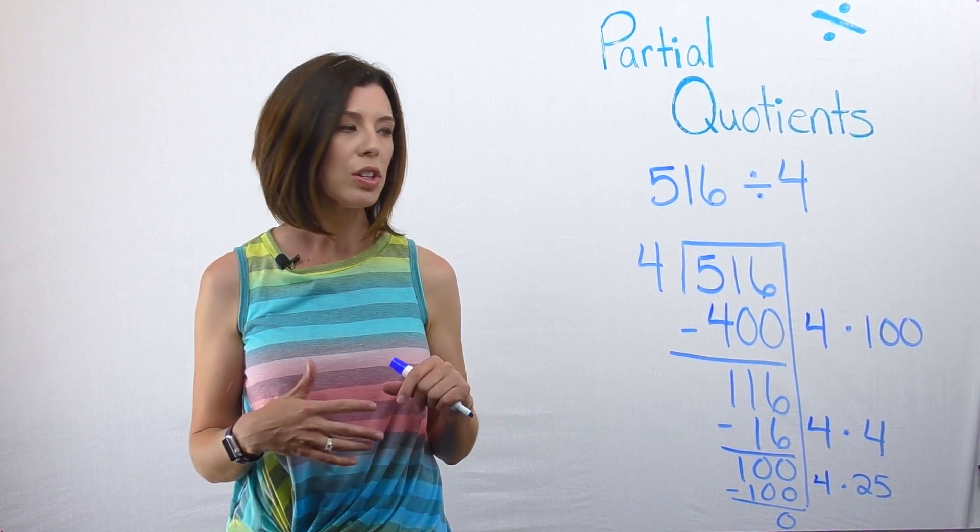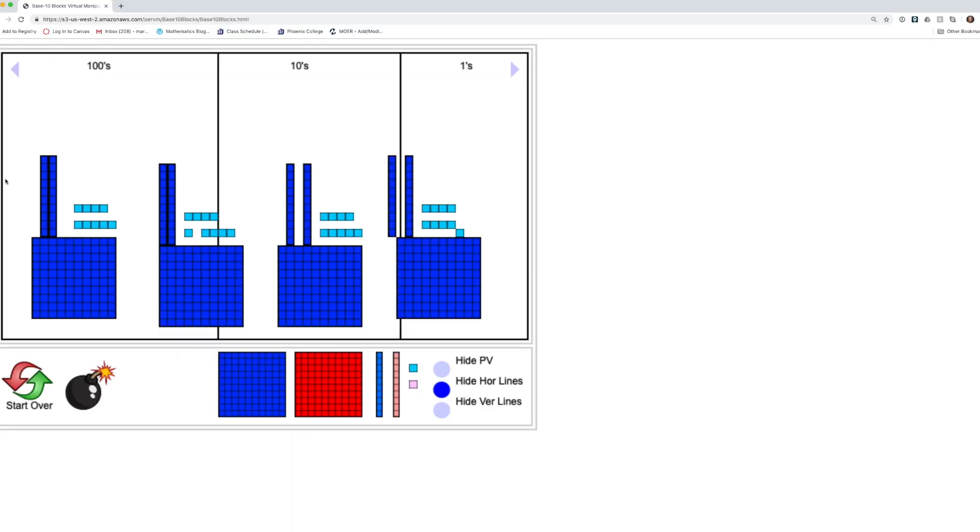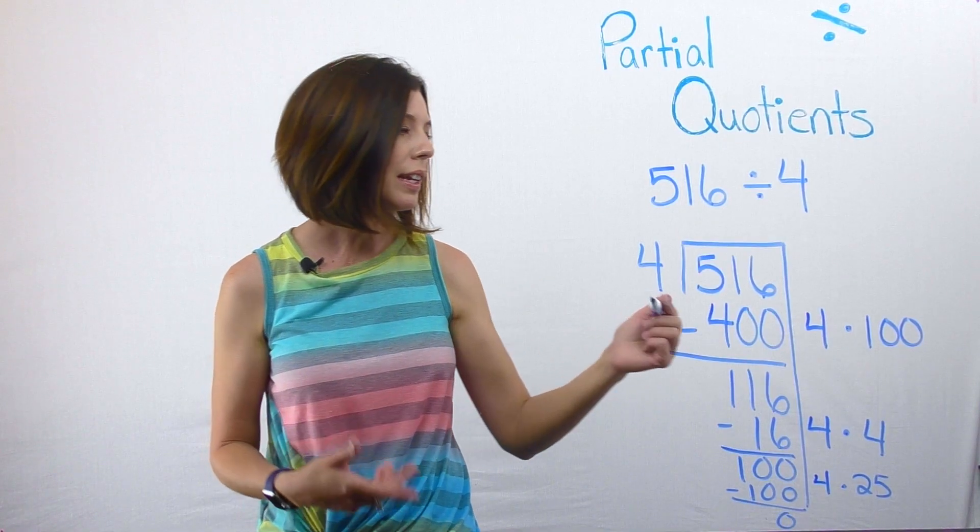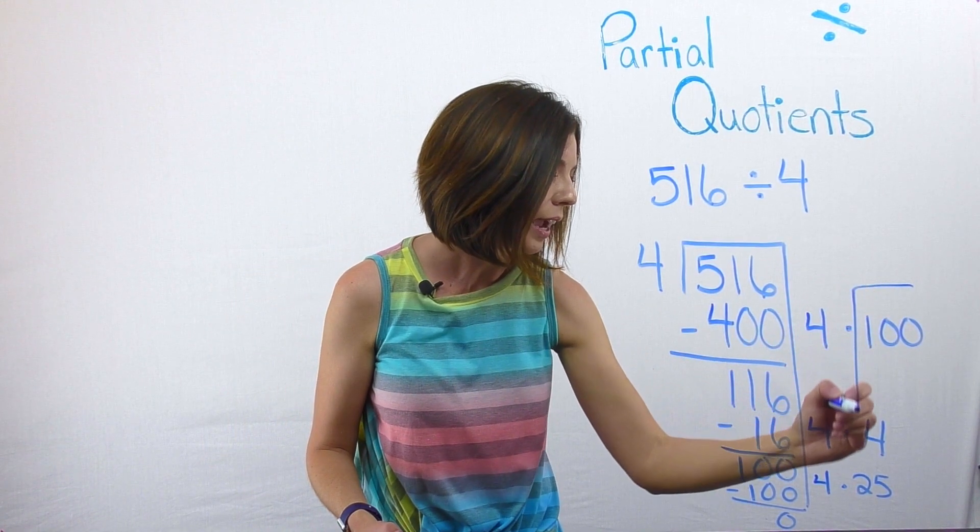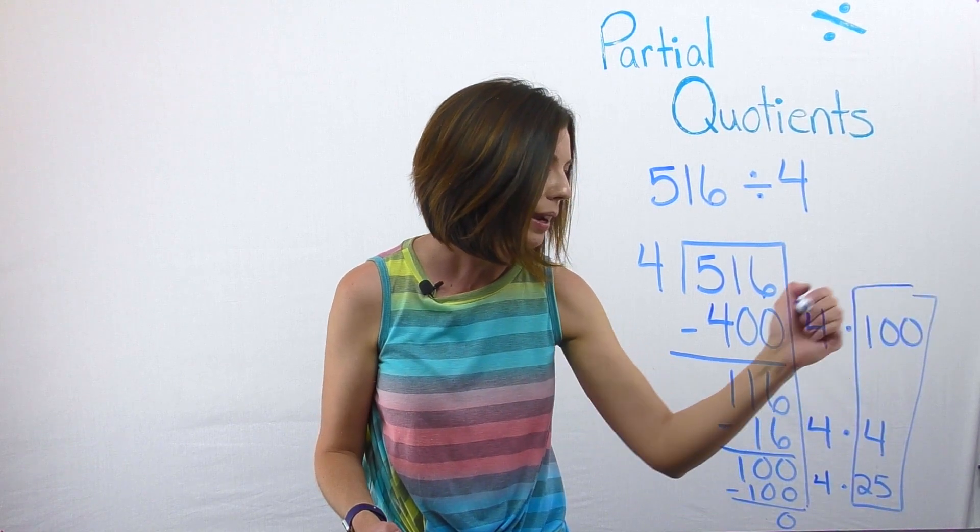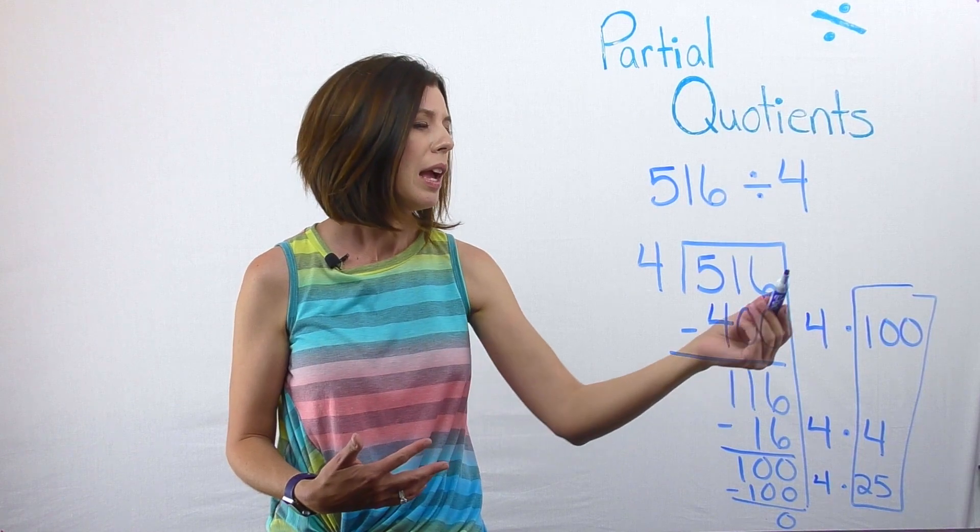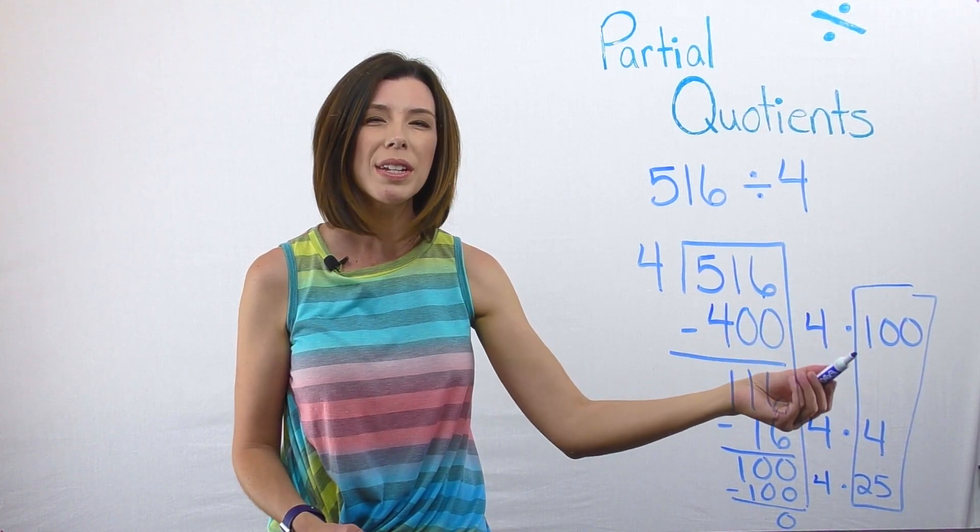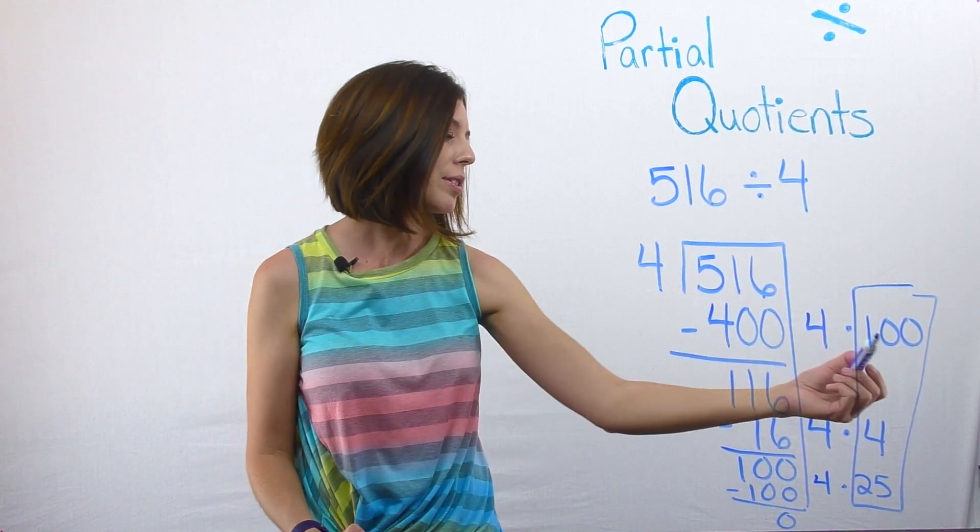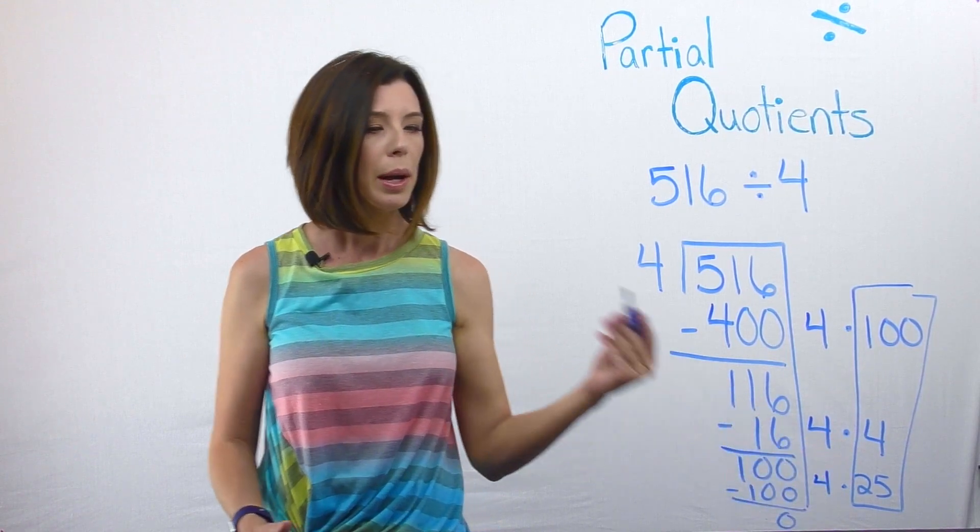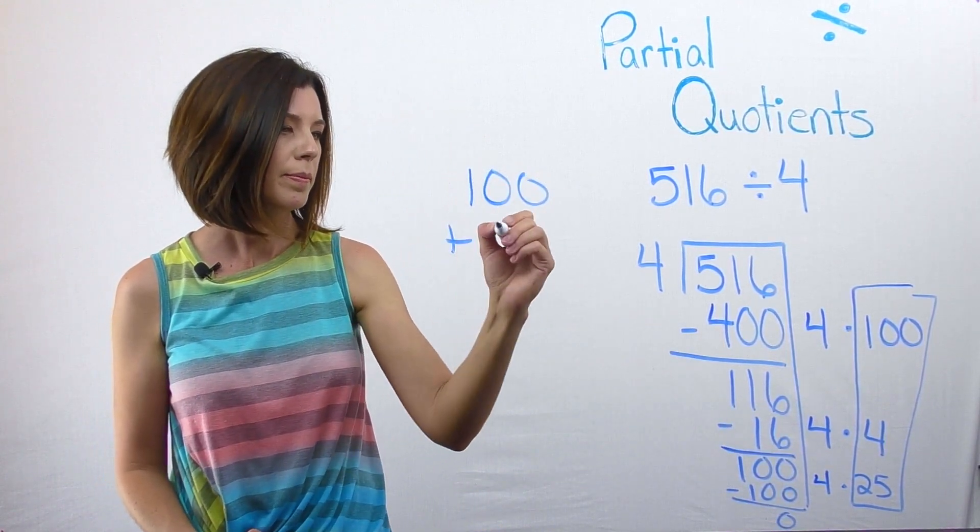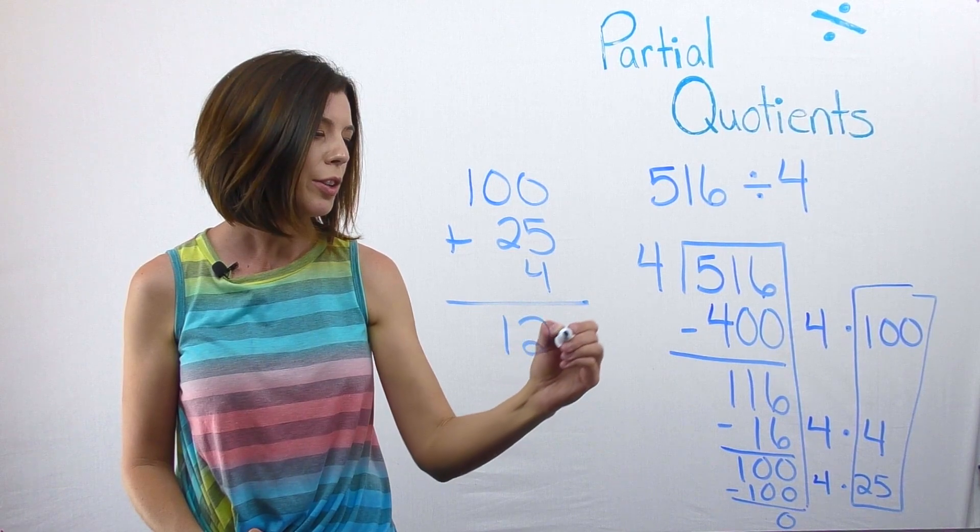In order to get my answer, when I'm looking at my piles, I can simply count them and realize that I have 129 in each pile. Or if I look at my work here, I'm simply looking at this column right here. Again, this was telling me that there were 4 groups of that. So I really care about what was in each group when I put them in the piles. So I have 100 plus 4 plus 25, which gives me 129.